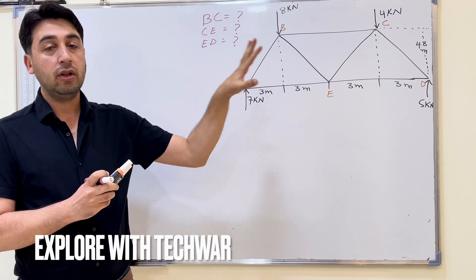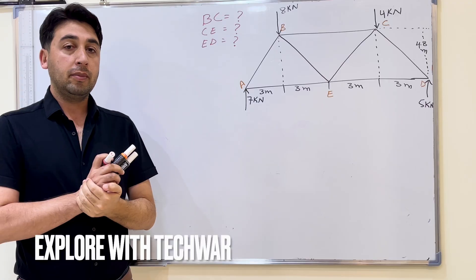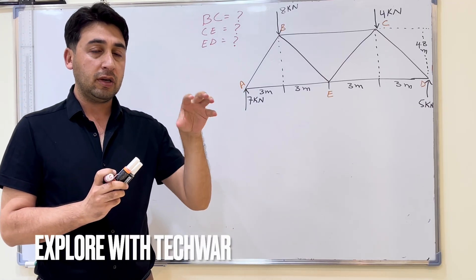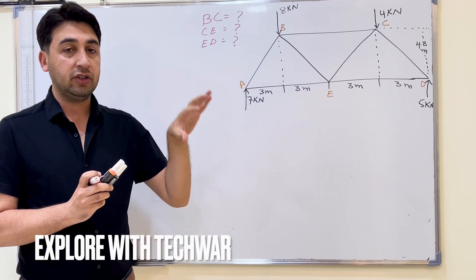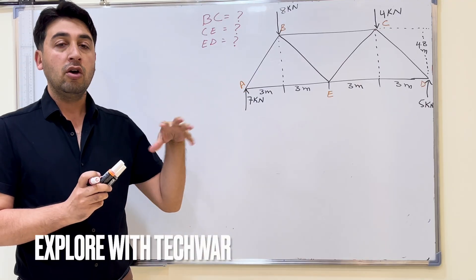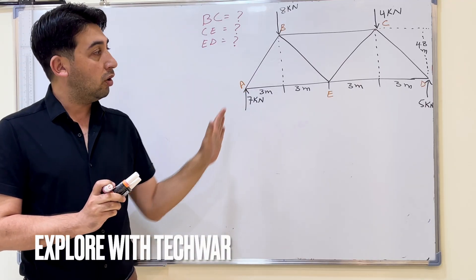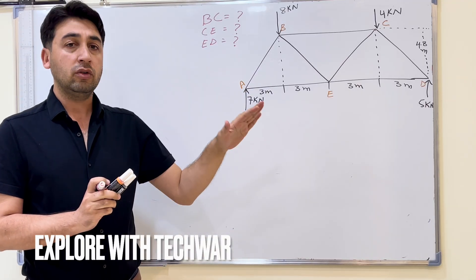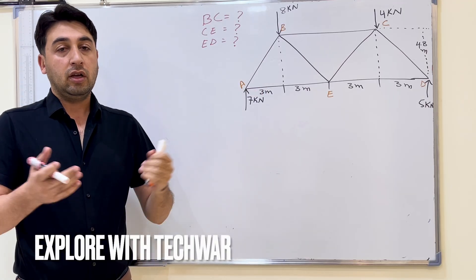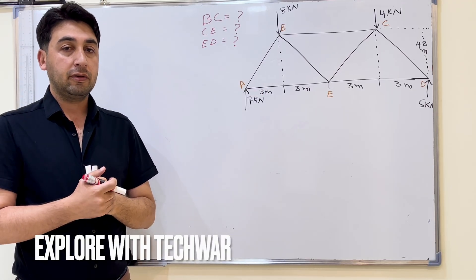We will not solve the whole truss — this is the benefit of method of section. When we are interested in specific members of the truss, we use method of section. We will use some part of the truss from where we can find those specific members.